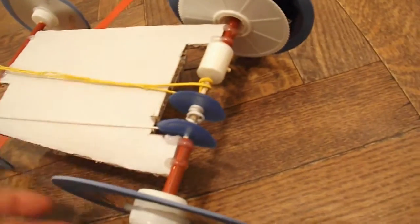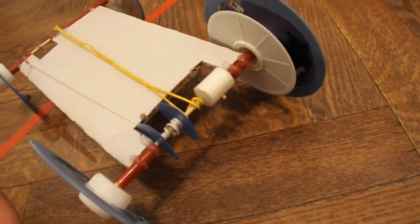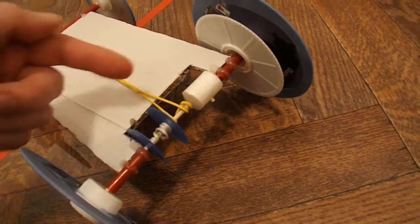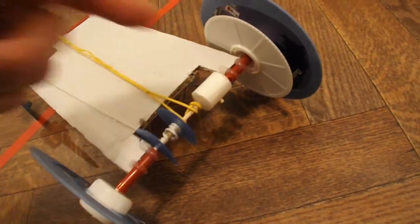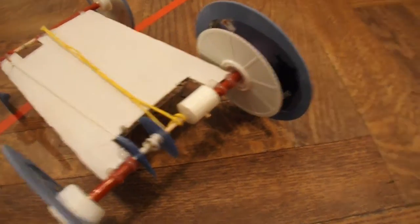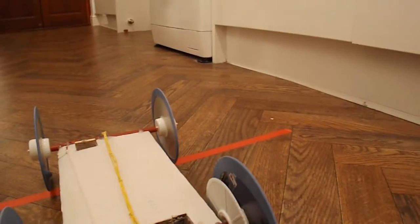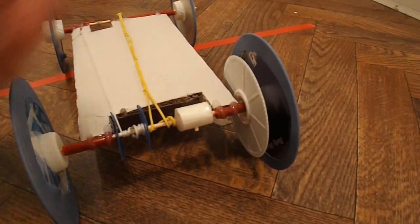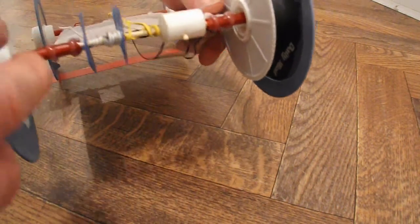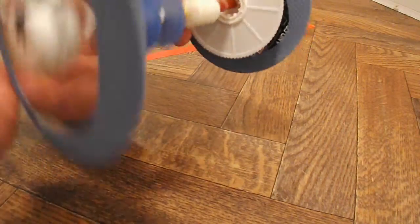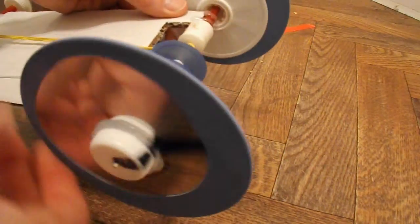Right, now we'll demonstrate winding it up. First obvious problem is, when you want to wind the rubber band up, you need to turn the wheels backwards, and the ratchet's going to try and stop you doing that. So, if you use one finger to hold the ratchet out the way, you can then wind it up.